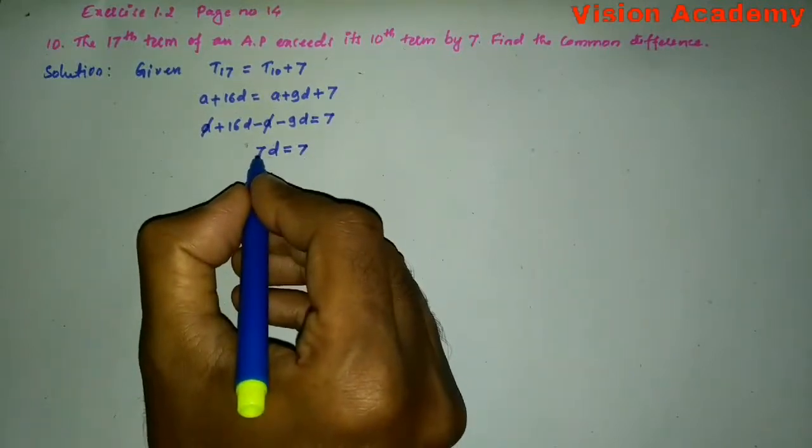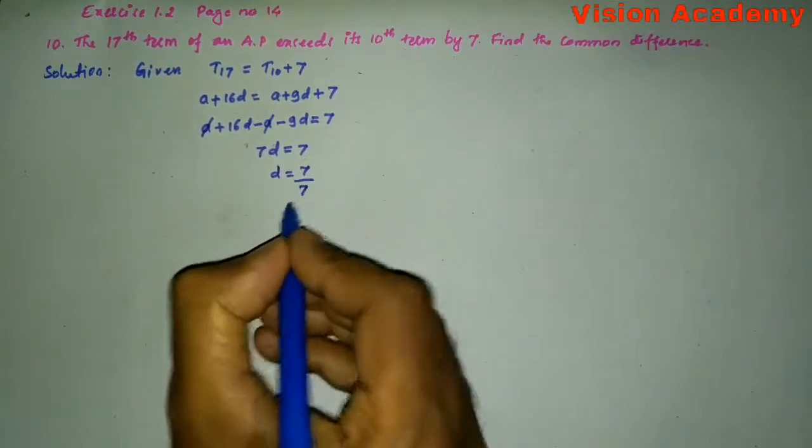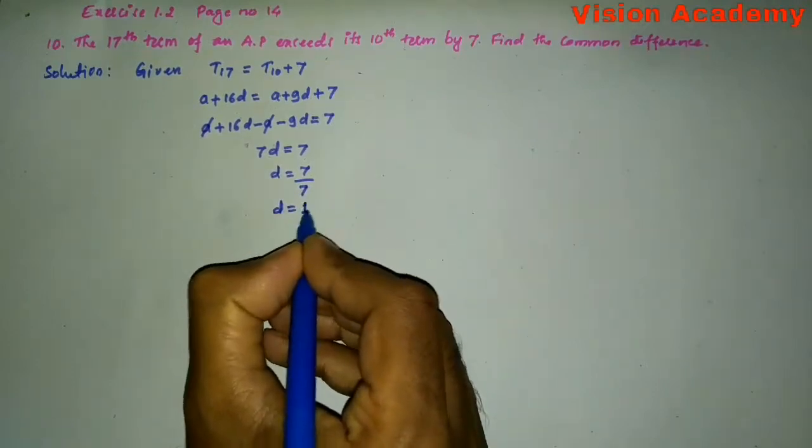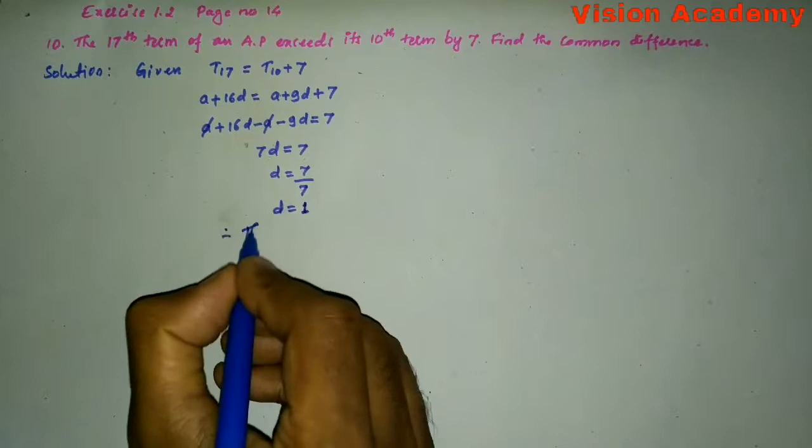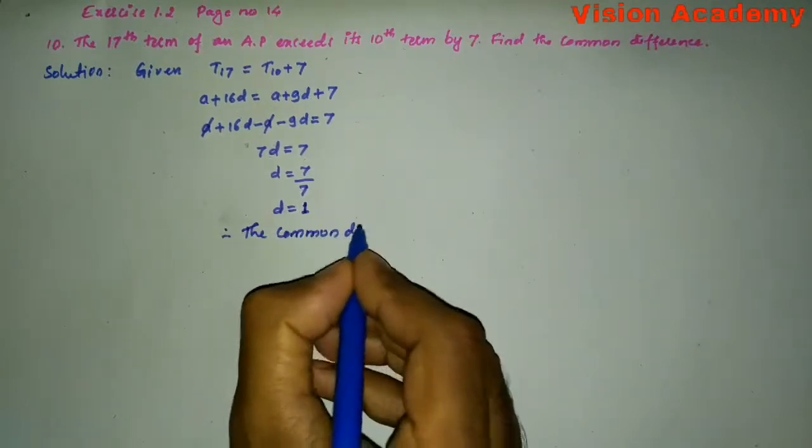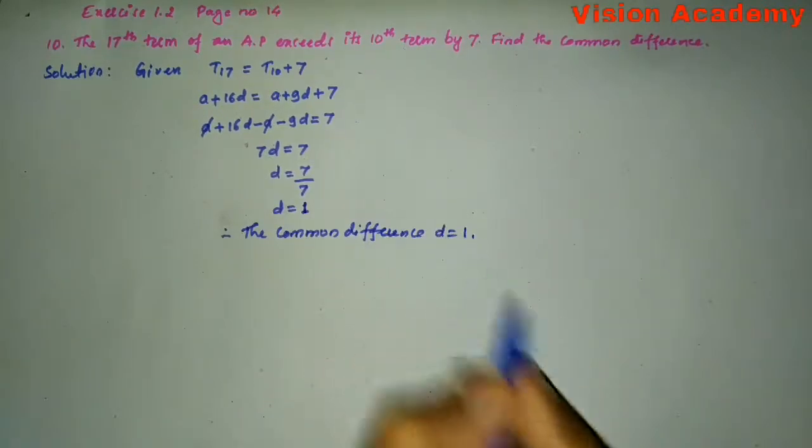Transform this 7 from LHS to RHS. D is equal to 7 divided by 7. So, D is equal to 1. Therefore, the common difference D is equal to 1.